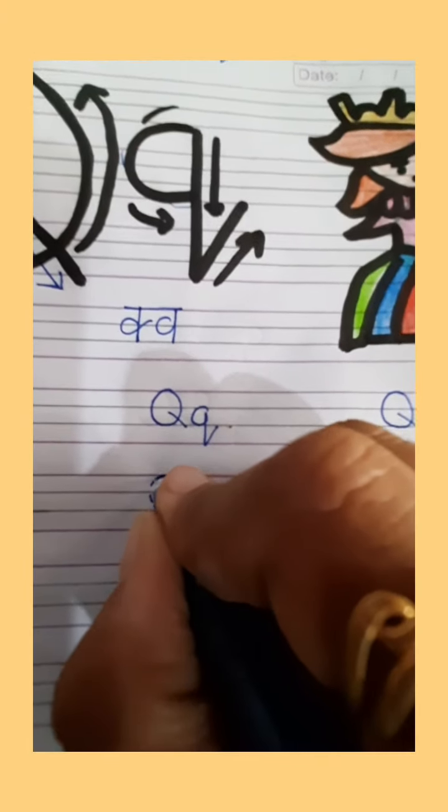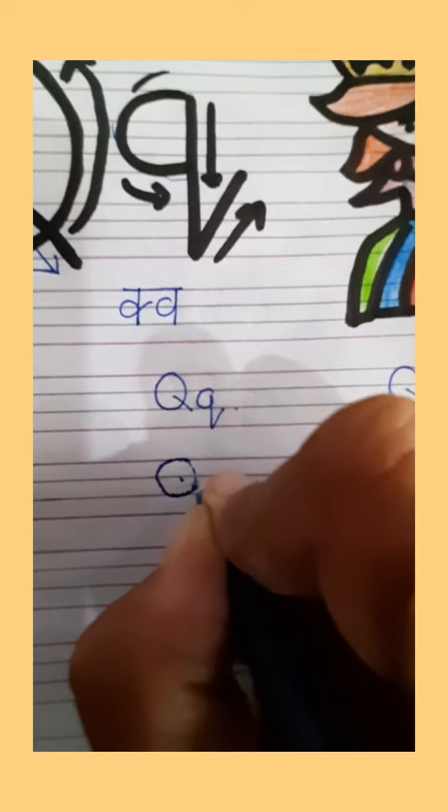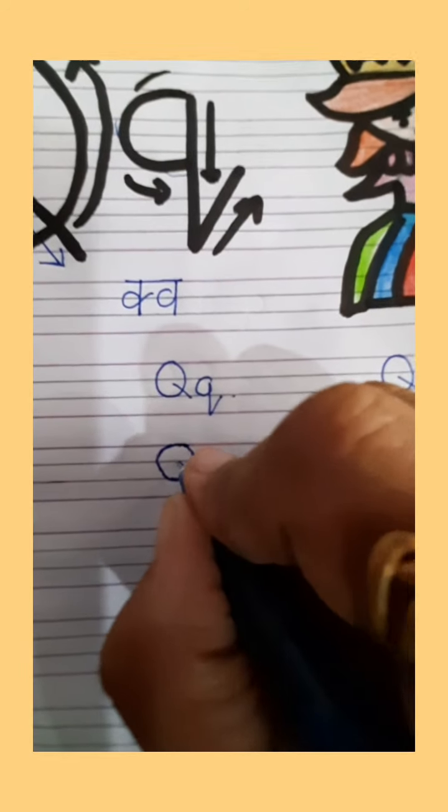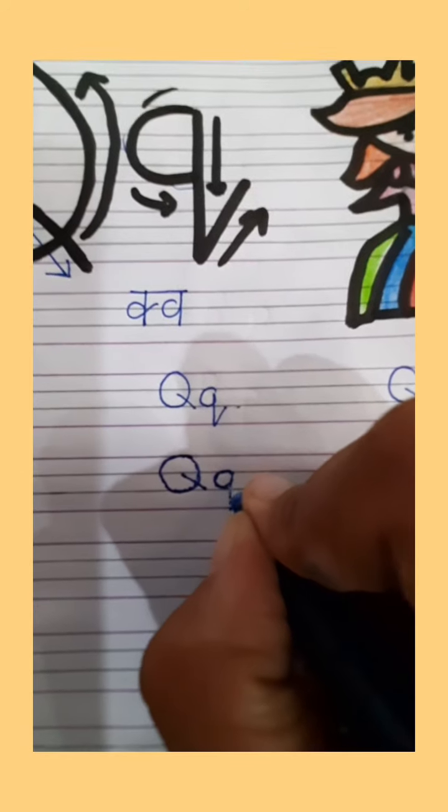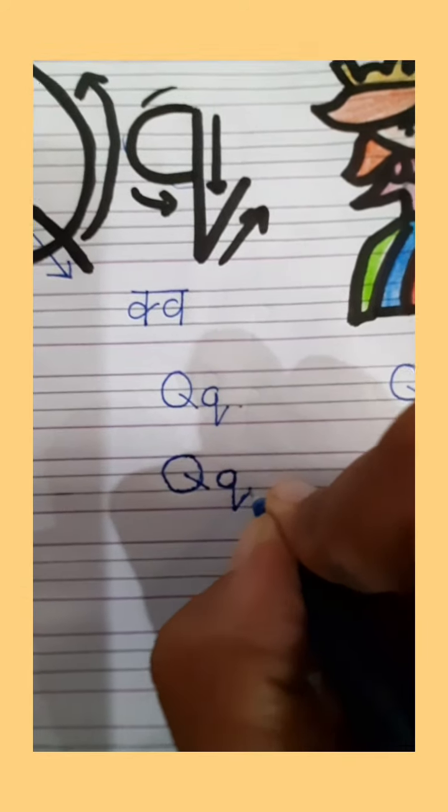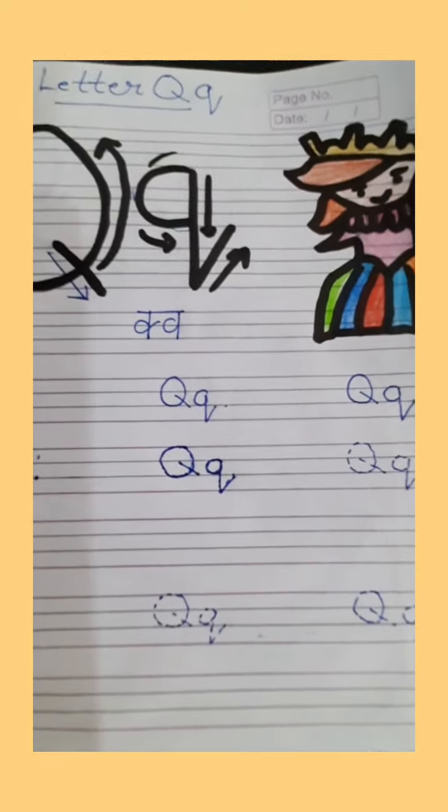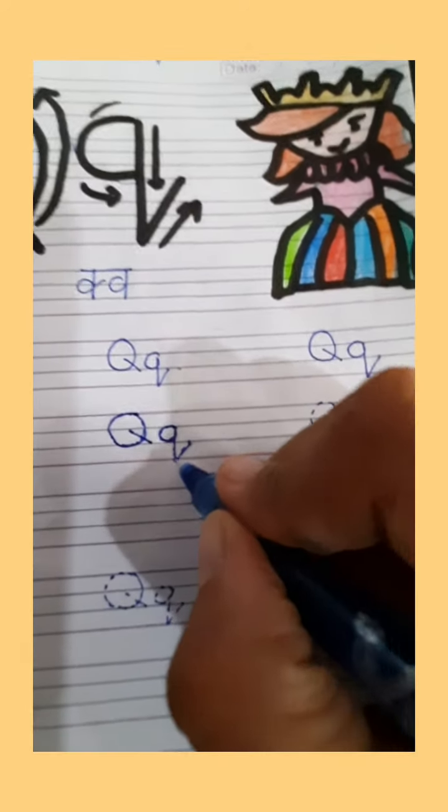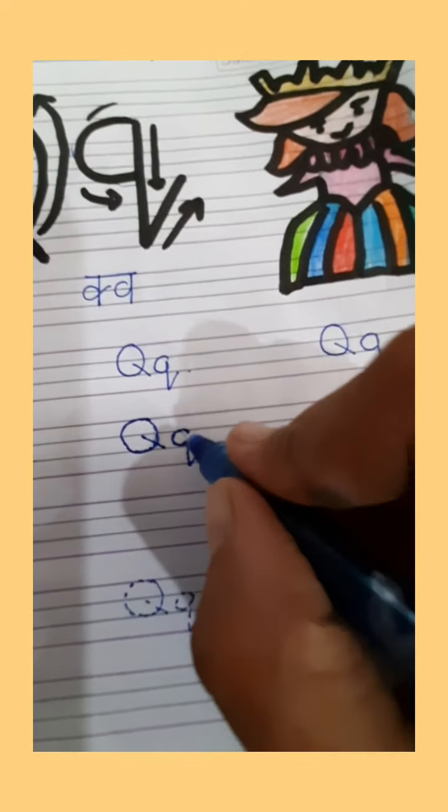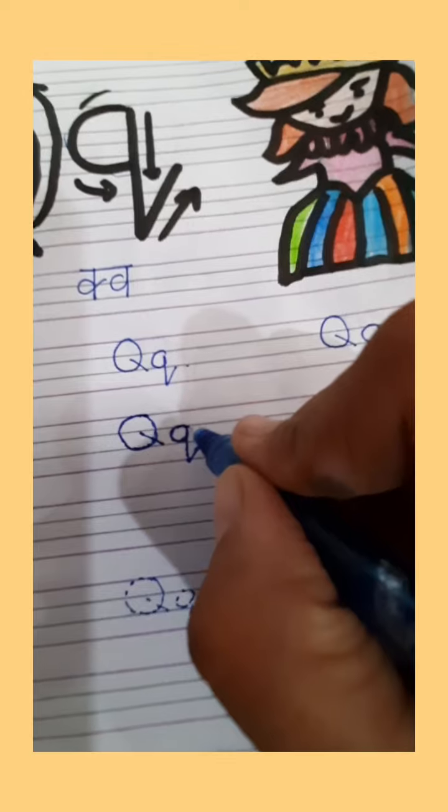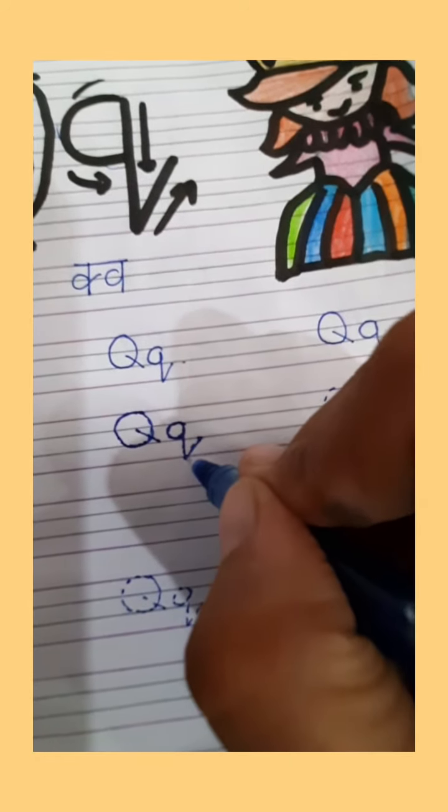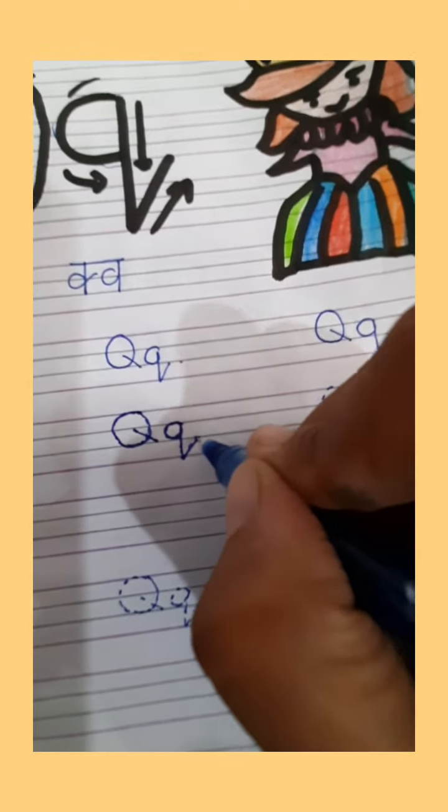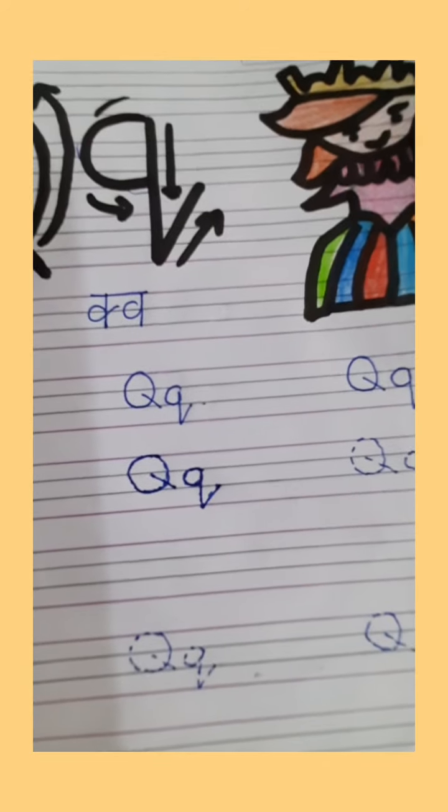Correct formation Q is. Uppercase letter Q. Curve. Standing line then slanting line. Lowercase letter Q. Slanting line we have to start with half line and you have to stop the slanting line.